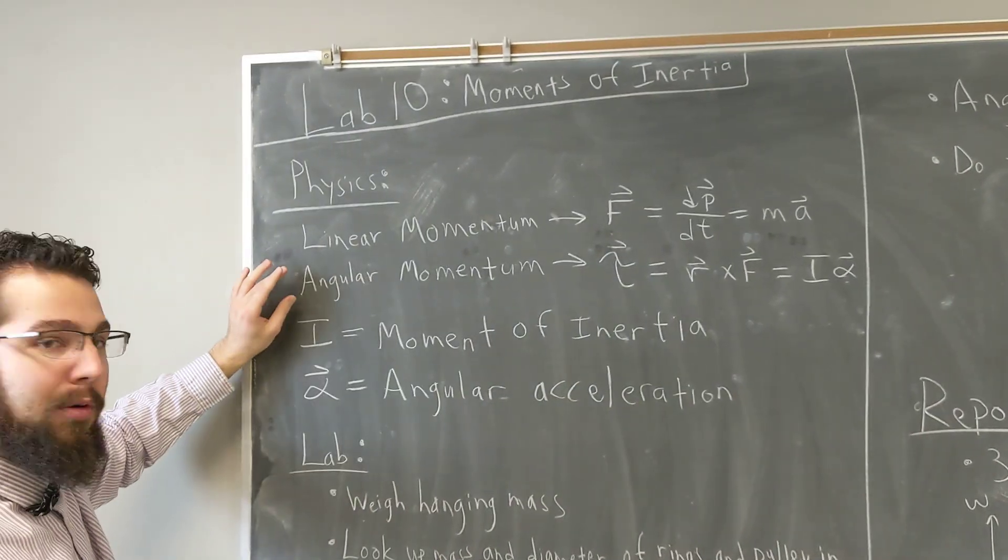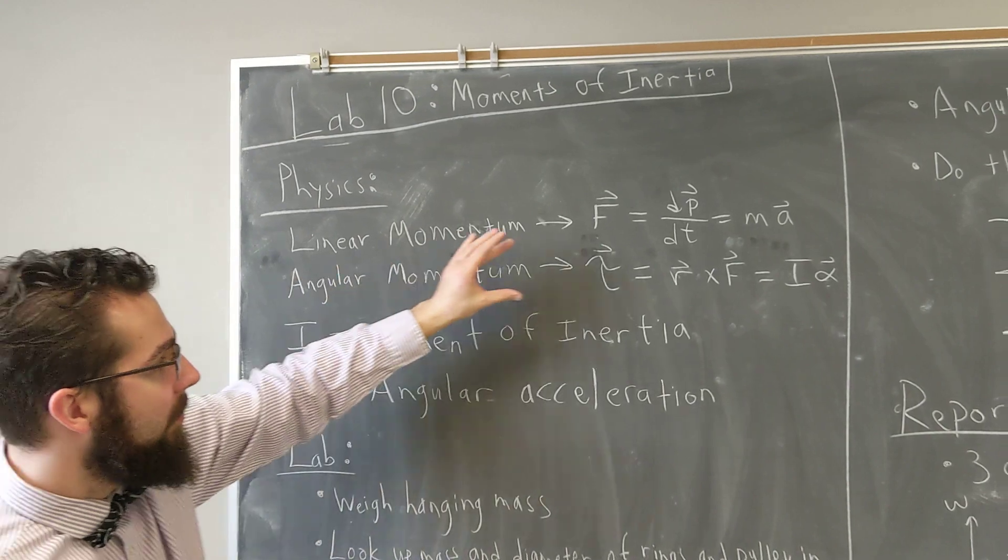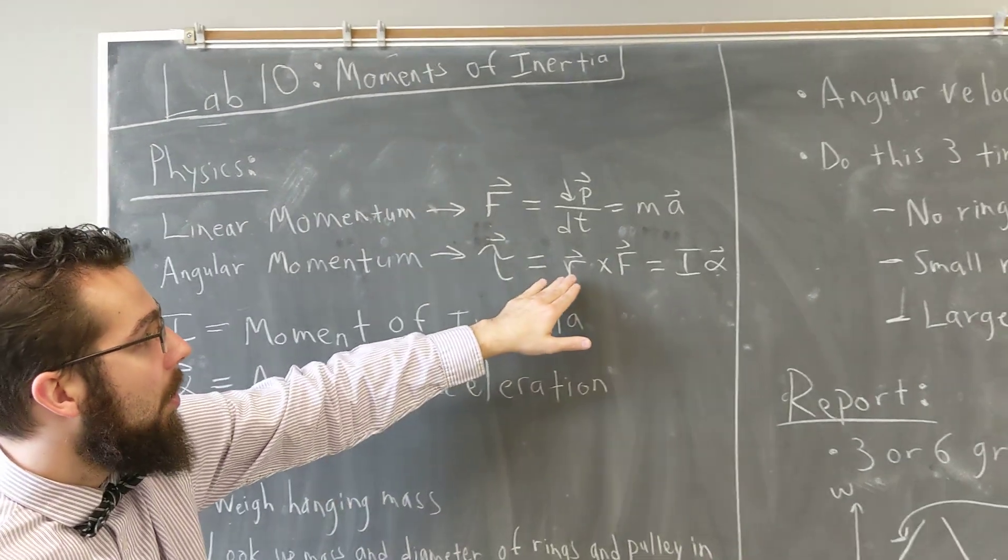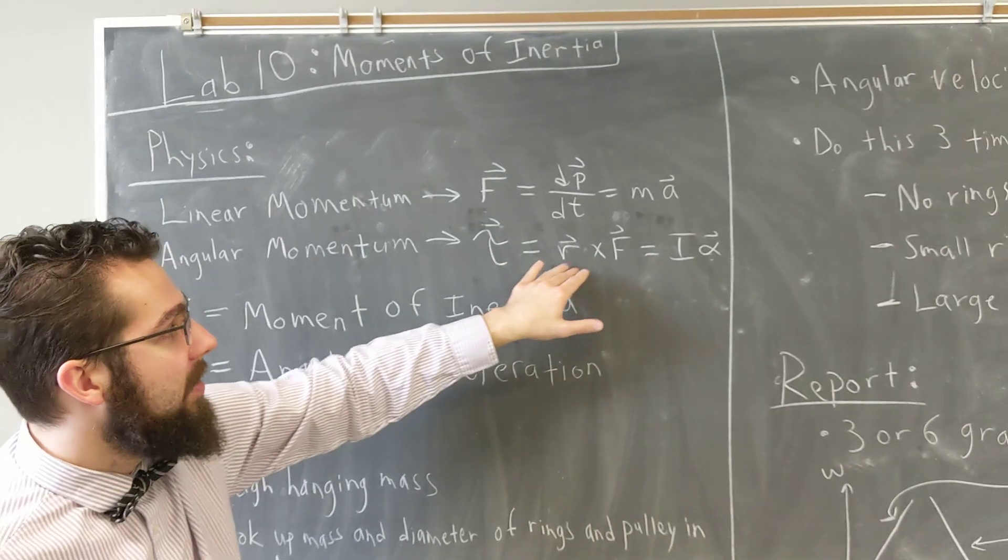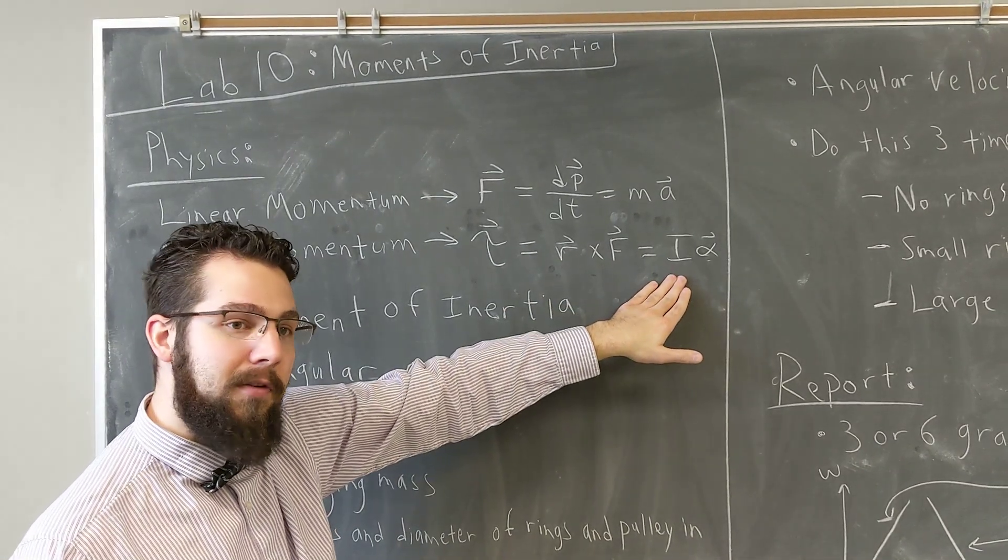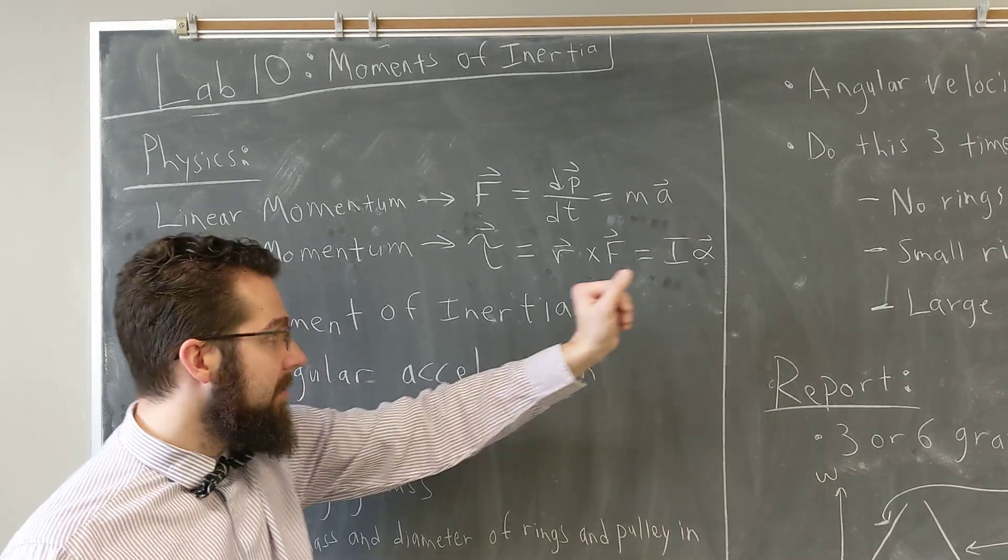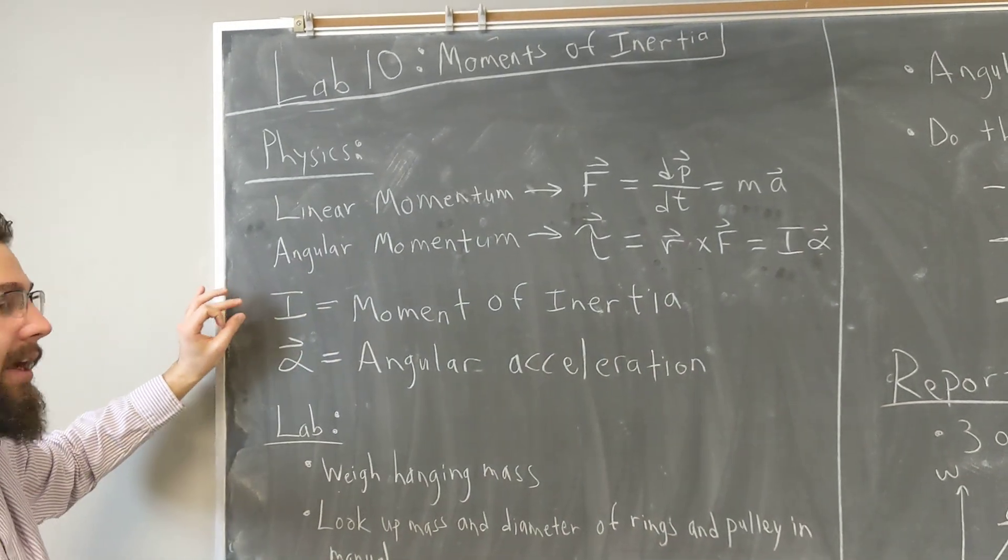For angular momentum, we can write an equivalence where instead of force we call it torque, and it's r cross F. This equals I, the moment of inertia, times alpha, the angular acceleration.